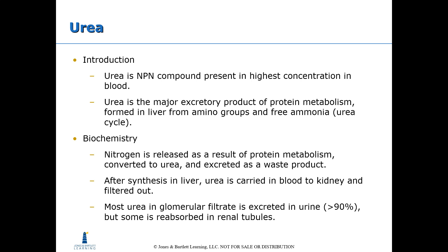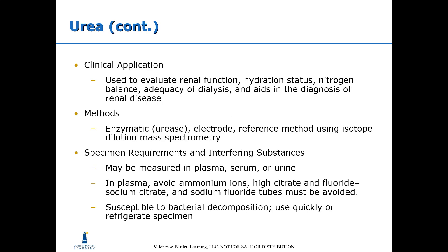Urea is the NPN compound present in the highest concentration in the blood. It is the major excretory product of protein metabolism and is formed in the liver from amino groups and free ammonia. Nitrogen is released as a result of protein metabolism, converted to urea, and excreted as a waste product. After synthesis in the liver, urea is carried in the blood to the kidney and filtered out — greater than 90% of urea in the glomerular filtrate is excreted in the urine, but some is reabsorbed in the renal tubules.